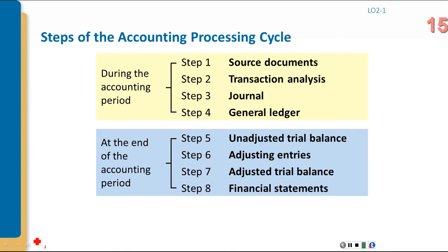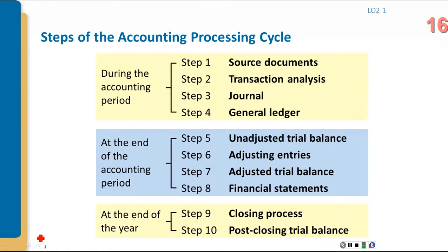At the end of the accounting period, you compile an unadjusted trial balance — an interim report for your own accounting purposes that does not go out to anyone. Then you determine whether adjusting journal entries are needed, which they usually are. After making those entries and posting them to the ledger, you prepare an adjusted trial balance to confirm you are in balance. From there you prepare the financial statements. At year end you go through the closing process, setting temporary accounts to zero so you are ready to start the next period.